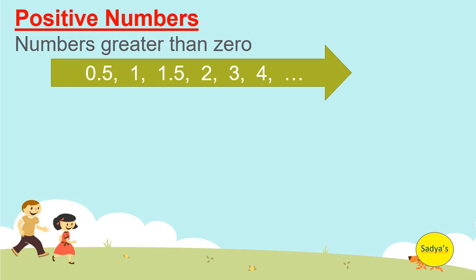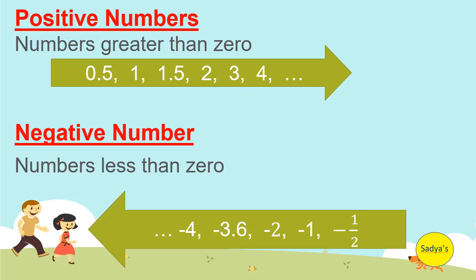In real world, we encounter numbers less than zero as well. We call them negative numbers. For example, negative 4, negative 3.6, negative 2, negative 1, negative 1 by 2.